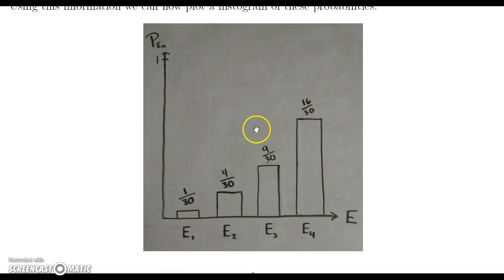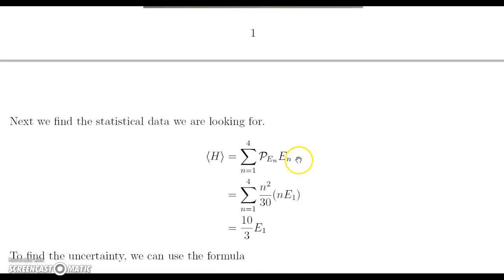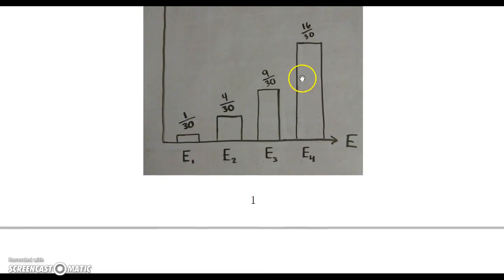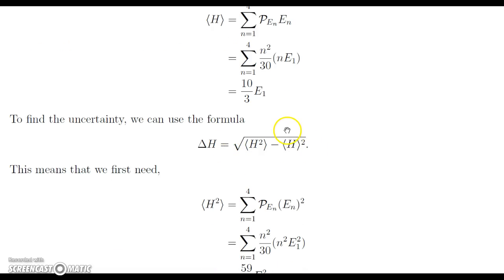And now if we look back at the histogram here, this actually makes sense. So 10 thirds is a little over 3, so we expect most of the time we're going to get somewhere in either the third or fourth energy. Most of the time we're going to get the fourth energy, which makes sense, because right here, the fourth energy value takes up slightly over half. And we barely get above 3, so we're closer to 4 for our expectation value. So this makes perfect sense.